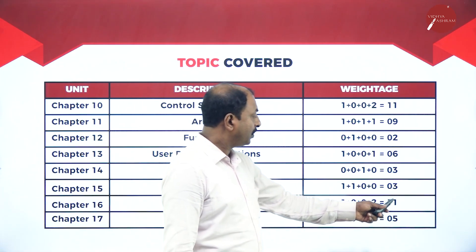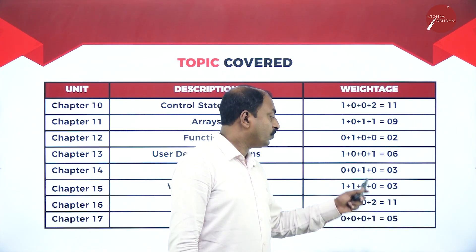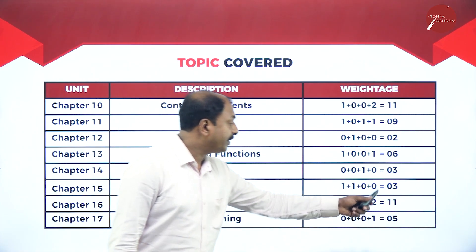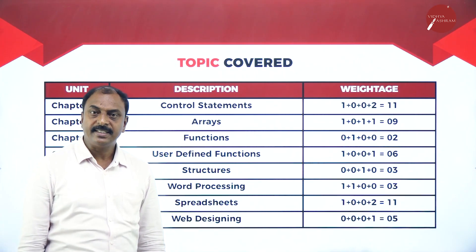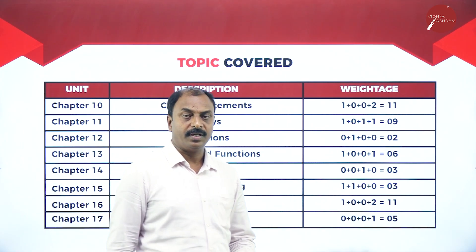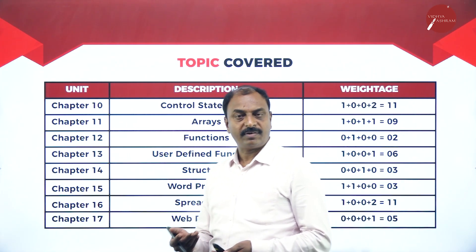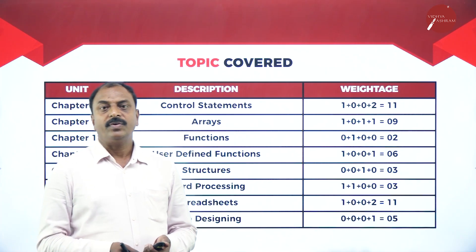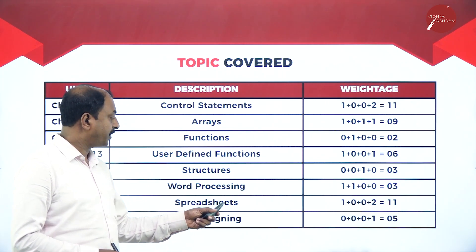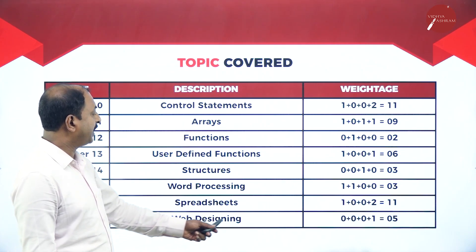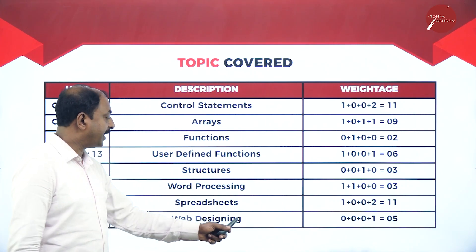Chapter sixteen is 'Spreadsheet' with a weightage of eleven marks — one MCQ and two five-marks questions. We are going to learn MS Excel as an example of spreadsheet software — how to open MS Excel, save a file, close a file, and the different features of MS Excel. Chapter seventeen is 'Web Designing' with a weightage of five marks — you will get one five-marks question.